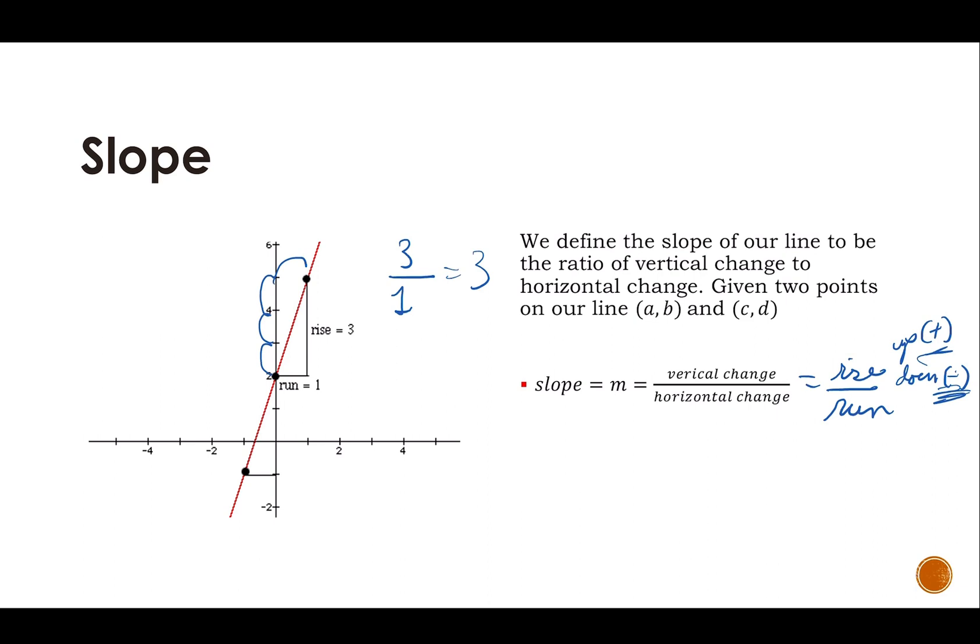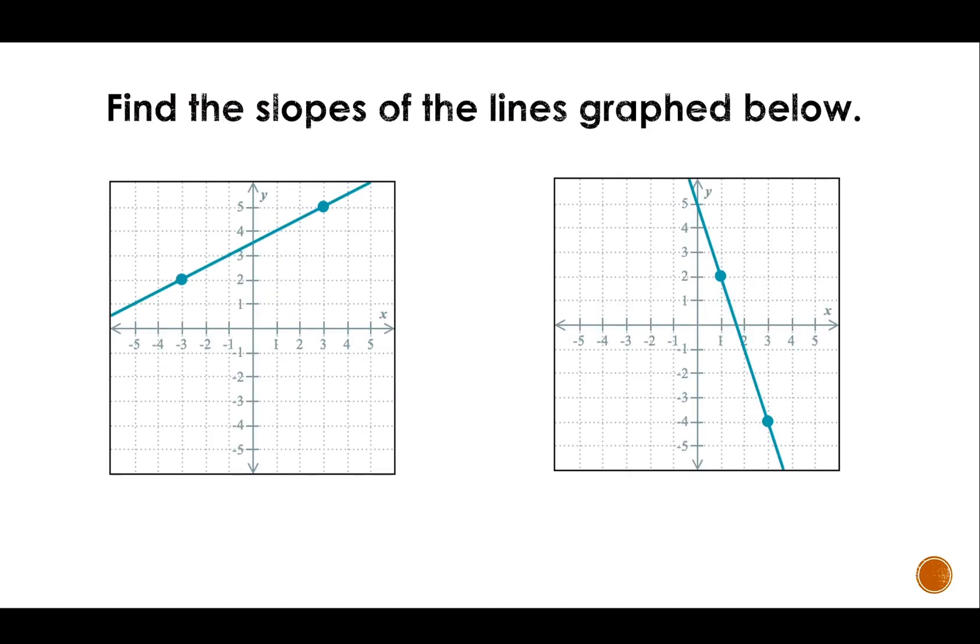So let's take a look at these two graphs. I already know that this graph on the left, because it looks like it's going uphill, is going to have positive slope. And this graph on the right, because it's going downhill, is going to have negative slope. So we have to make sure that the slopes we find meet that criteria. We typically denote slope with the letter M.